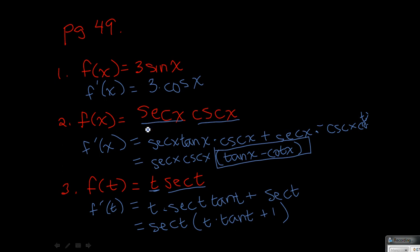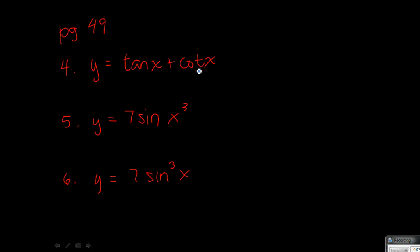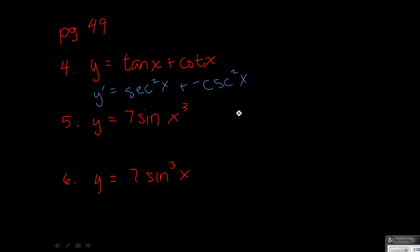Notice that on this first one I did derivative, keep, then derivative, keep — and on this one I did keep, derivative, then keep, derivative. It doesn't matter which way you do it as long as you make them take turns. Since you're adding and multiplying, the order is not important. On number 4, the derivative of tangent x is secant squared x, and the derivative of cotangent x is negative cosecant squared x, and that would be your answer.